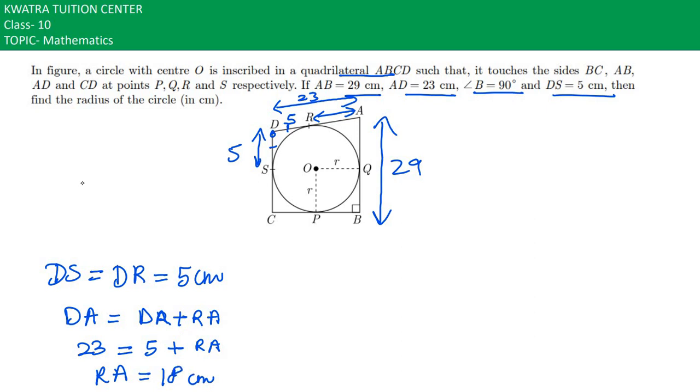RA is equal to 18 cm. And if RA is 18 cm, then AQ would be 18 cm. Why? Because we know the tangents drawn from external points are equal to each other.